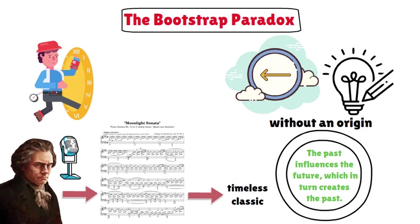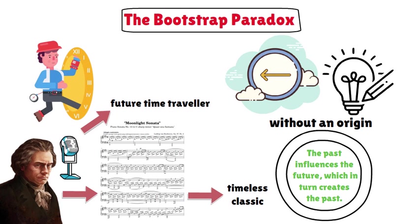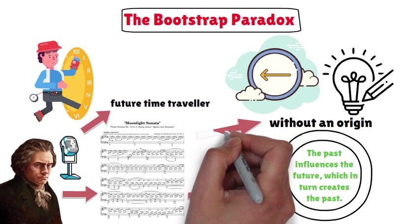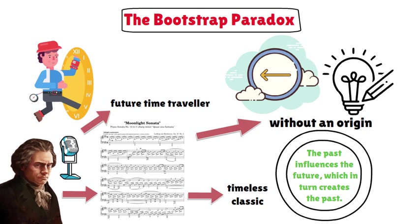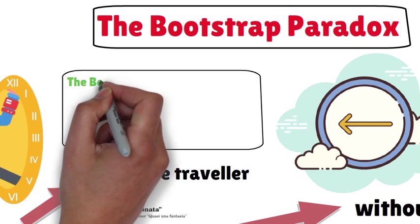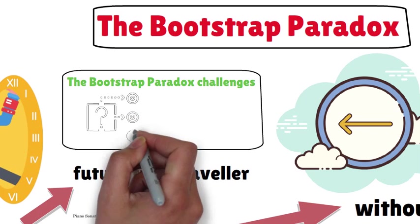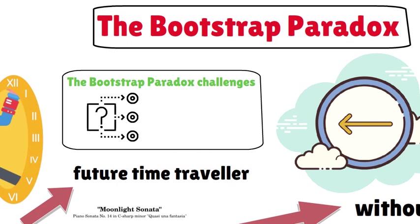However, upon closer inspection, it's revealed that Beethoven received the music from the future time traveler, who got it from the published score. Here, the music exists without a clear origin. It's a loop where it's impossible to determine where the music truly originated. The Bootstrap Paradox challenges our understanding of cause and effect, suggesting that in certain scenarios, events may lack a definitive beginning, raising questions about the nature of time itself.